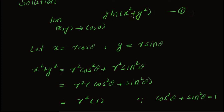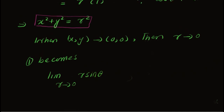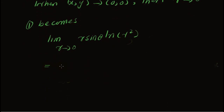Since y equals r sin theta and x squared plus y squared equals r squared, equation 1 becomes: limit as r approaches 0 of r sin theta times log of r squared. Using the logarithm property, log of r squared equals 2 log r, so this can be written as the limit as r approaches 0 of 2r sin theta times log r.